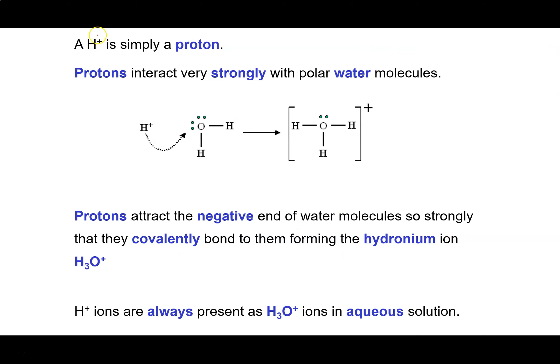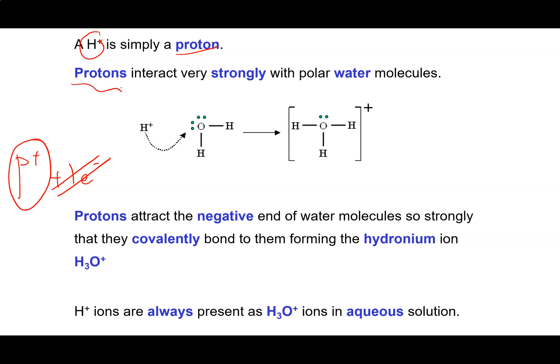It's important to realize that a hydrogen ion is simply a proton, because a hydrogen atom is a proton and one electron. If you take away the electron to generate the ion, you're left with just a proton. A proton is the most dense unit of positive charge that you can have, and protons interact very, very strongly with water molecules.